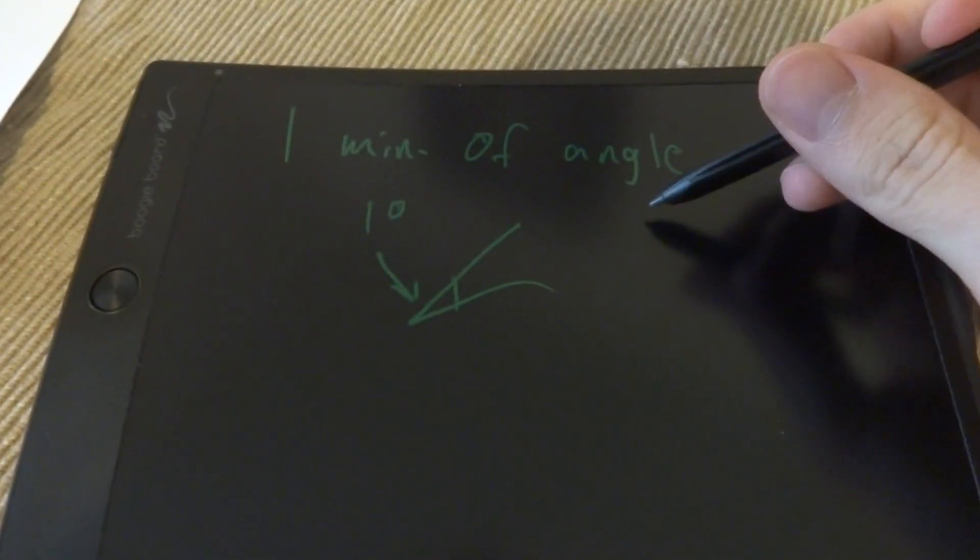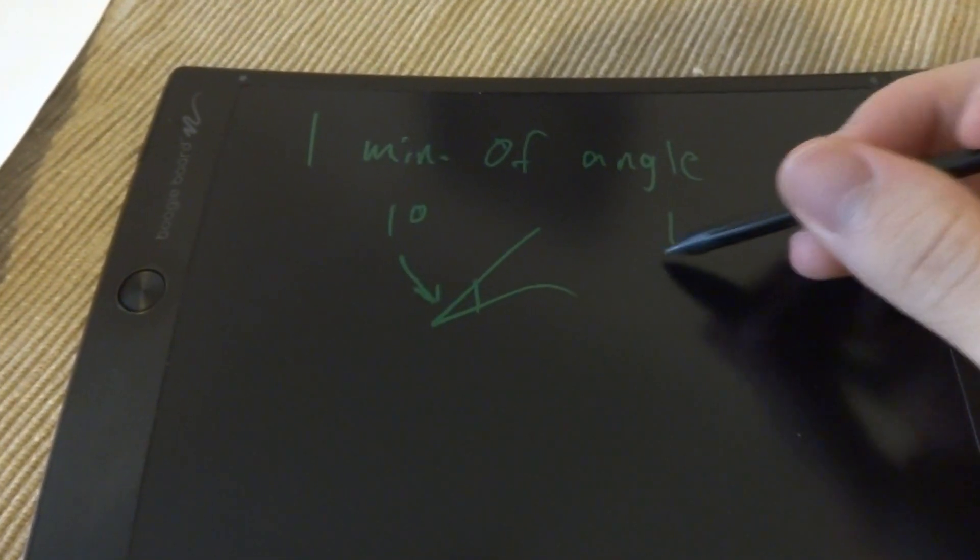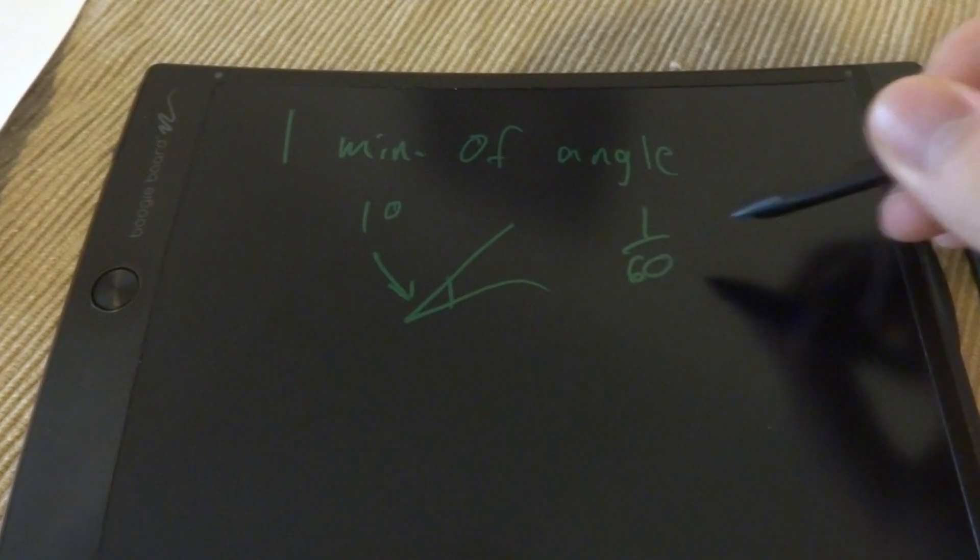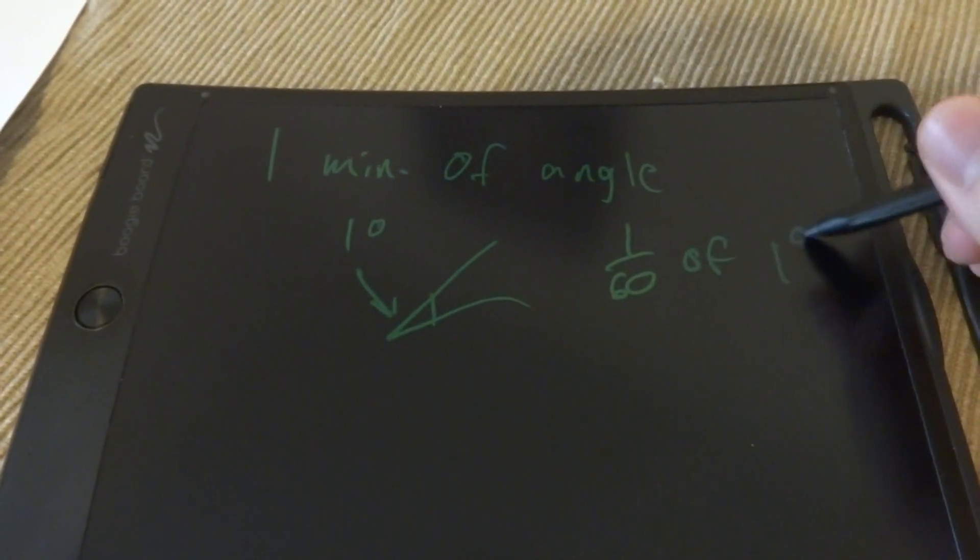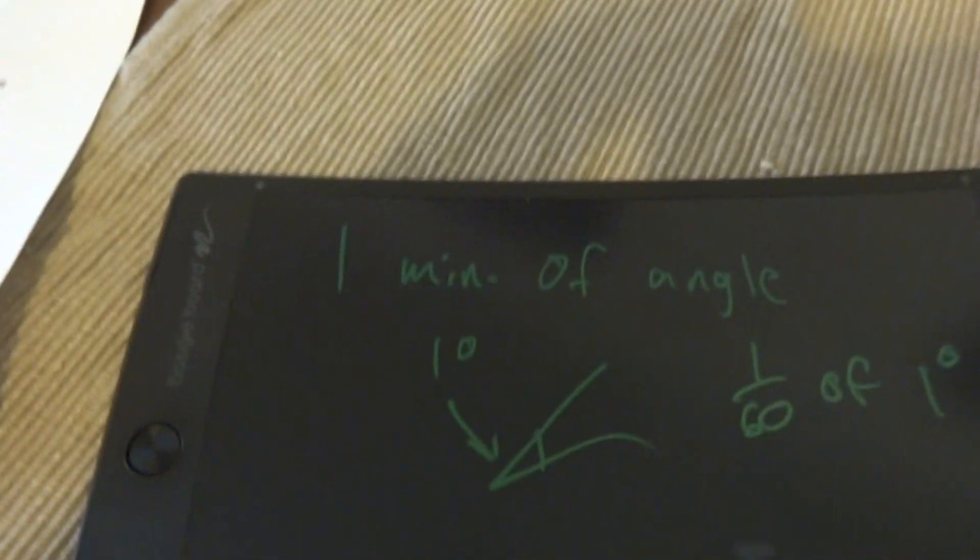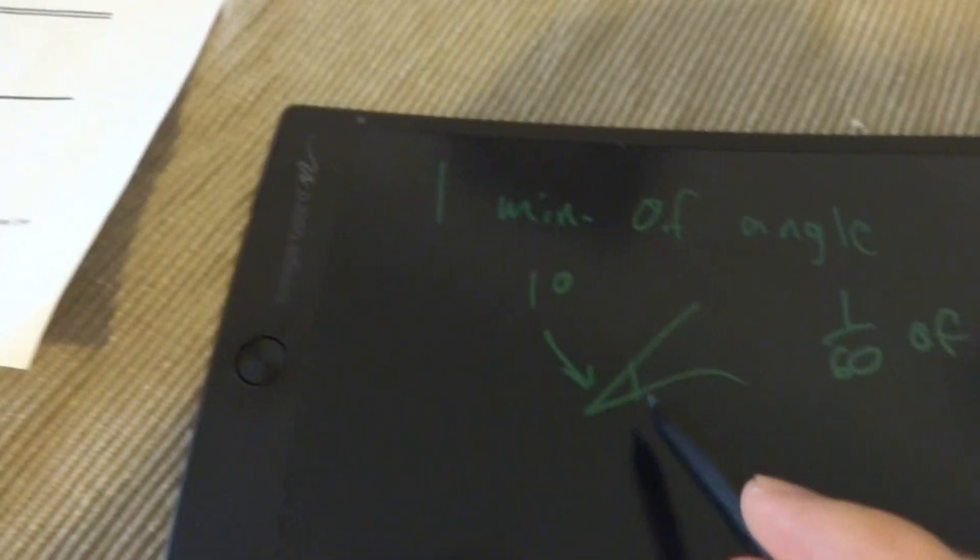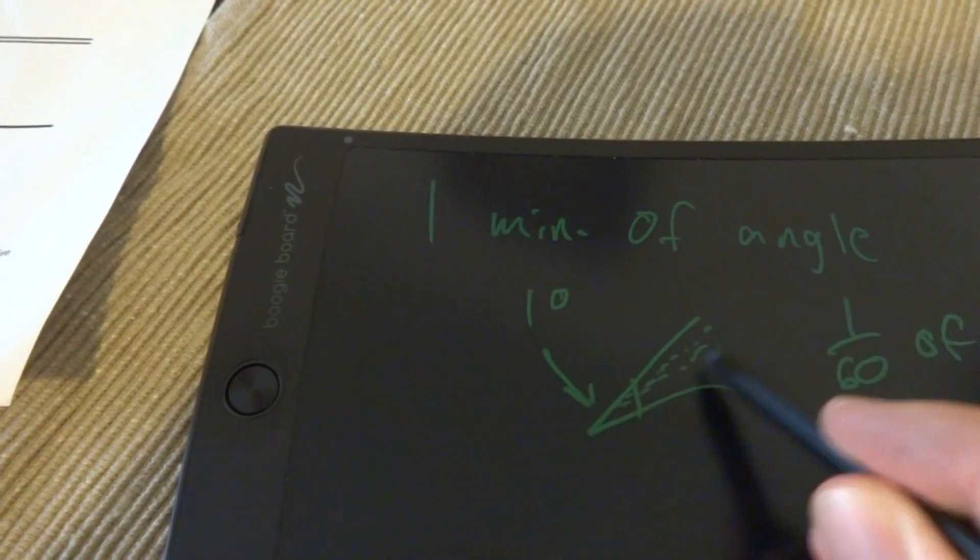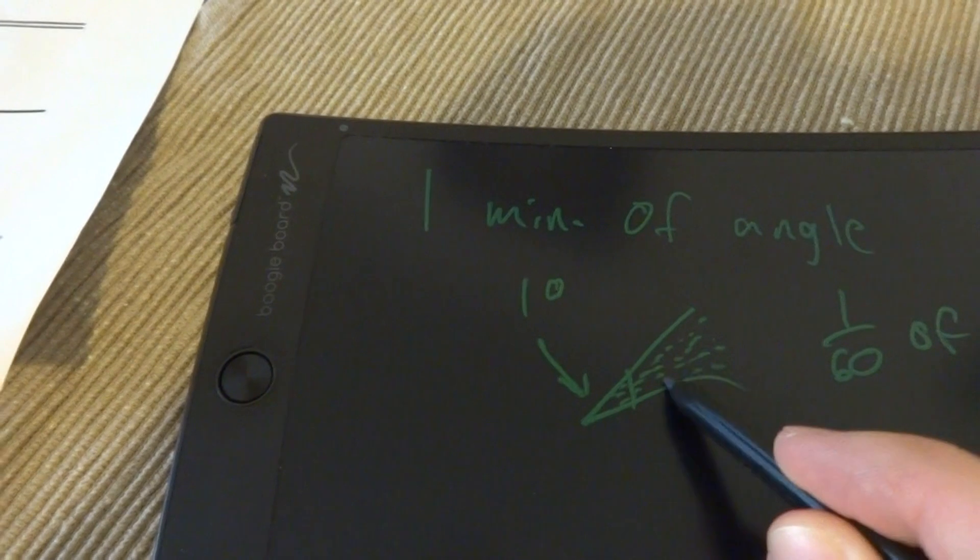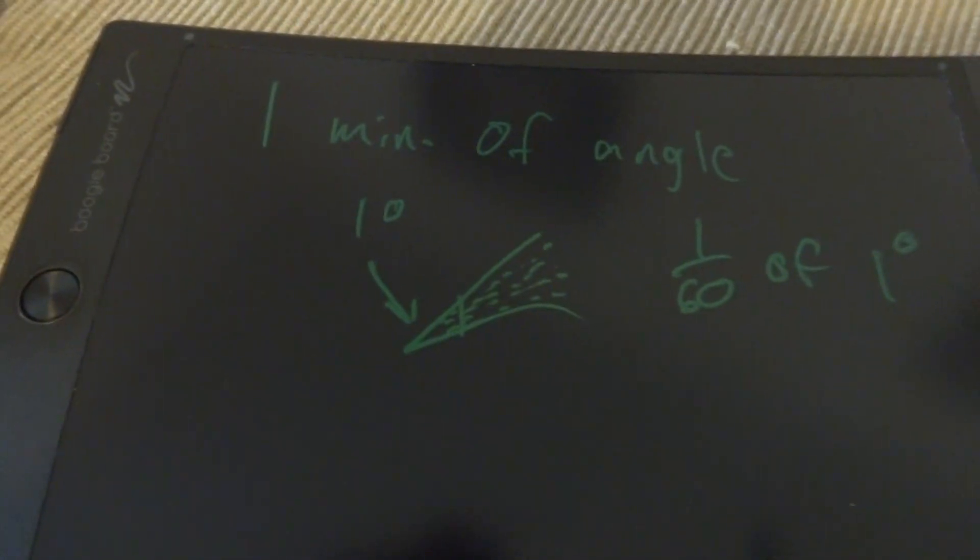If you've got one minute of angle, that'd be 1/60th of one degree. So what's going on there is like if you've got this one degree angle, there's like 60 imaginary lines in between so that you can divide up one degree into 60 minutes.